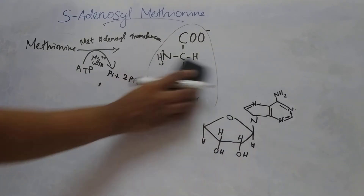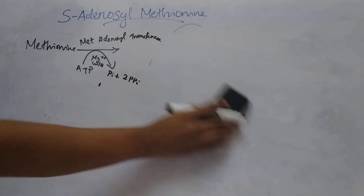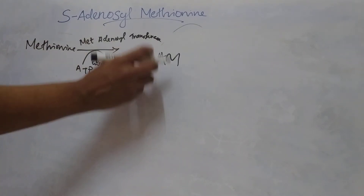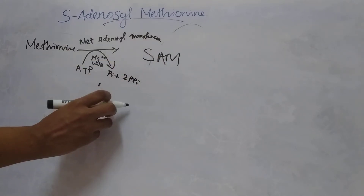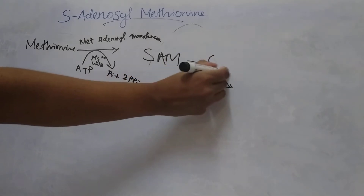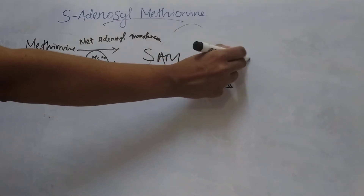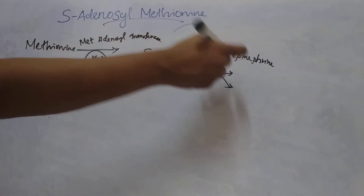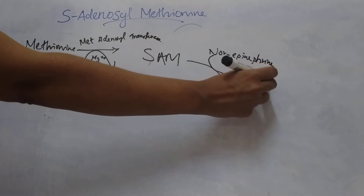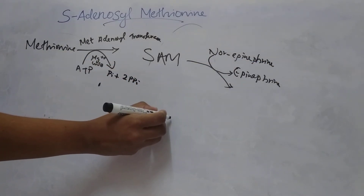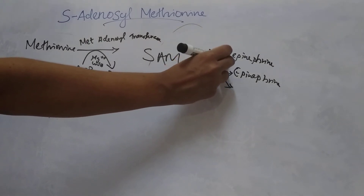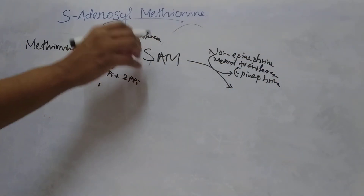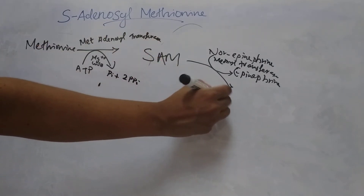The first step in this cycle is activation of methionine to S-adenosyl methionine. Then, S-adenosyl methionine donates its methyl group to an acceptor — for example, norepinephrine. S-adenosyl methionine donates the methyl group to norepinephrine and it forms epinephrine. The enzyme here is methyl transferase. And S-adenosyl methionine is converted to S-adenosyl homocysteine.